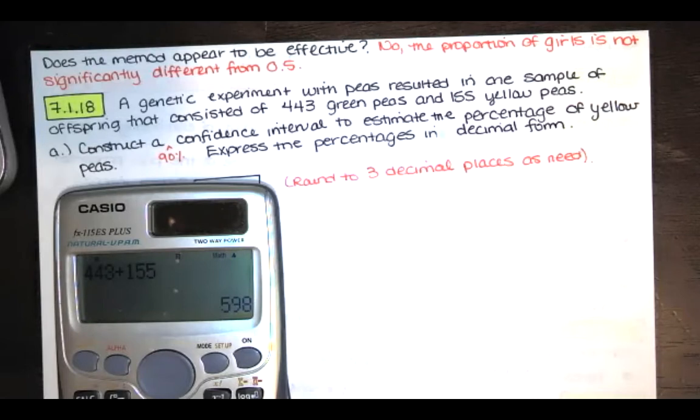The trials are independent. The outcome of one trial, whether you get a green pea or a yellow pea, is not at all affected by the other trials. And yes, the probabilities remain constant for each trial. The probability of getting a green pea as opposed to a yellow pea, or the probability of success in one trial, the probability of getting a yellow pea in one trial, is constant from trial to trial. So the conditions for the binomial distribution are met.